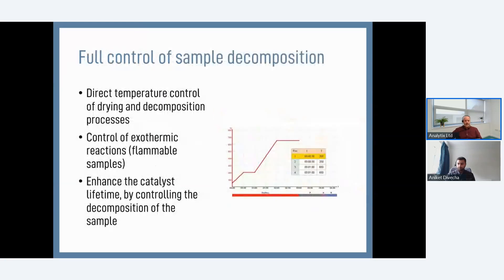Control has been further improved with a thermocouple located in one of the prongs of the sample introduction chamber, giving a very accurate representation of the temperature profile we're trying to achieve. Typically we dry a sample at 200°C and then heat it up to 650°C. This is important for exothermic or reactive samples such as petrochemicals or plastics, which can sometimes pop. Without good temperature control, this decreases the lifetime of the catalyst. By having accurate temperature feedback and control, we can get full combustion and also improve and lengthen the lifetime of the catalyst and the amalgamator.